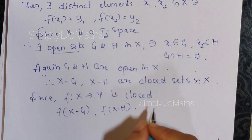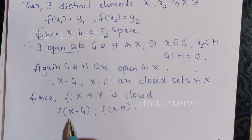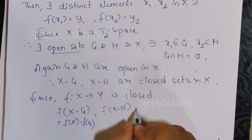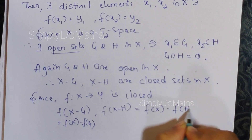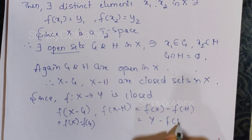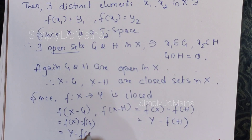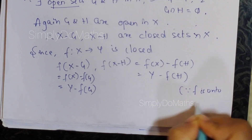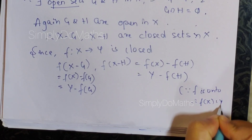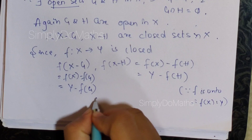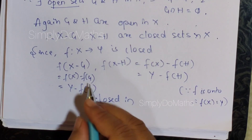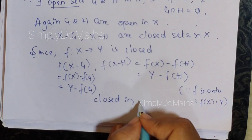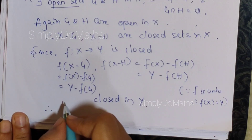Applying f to the closed sets: f(X minus G) and f(X minus H). Now, f(X minus G) can be written as f(X) minus f(G), and f(X minus H) as f(X) minus f(H). Since f is onto, f(X) = Y. So these become Y minus f(G) and Y minus f(H), which are closed in Y.